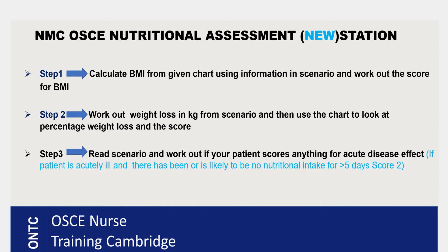In step three, read the scenario and work out if your patient scores anything for acute disease effect — meaning if your patient is acutely ill and there has been or is likely to be no nutritional intake for more than five days, i.e. six days or more. This applies whether it's through NG feed or orally. If you think your patient is so ill they won't have any nutrition for six days or more, then you score that patient in step three.